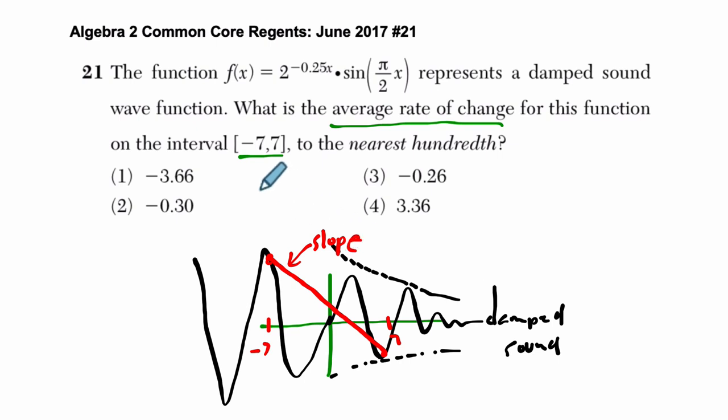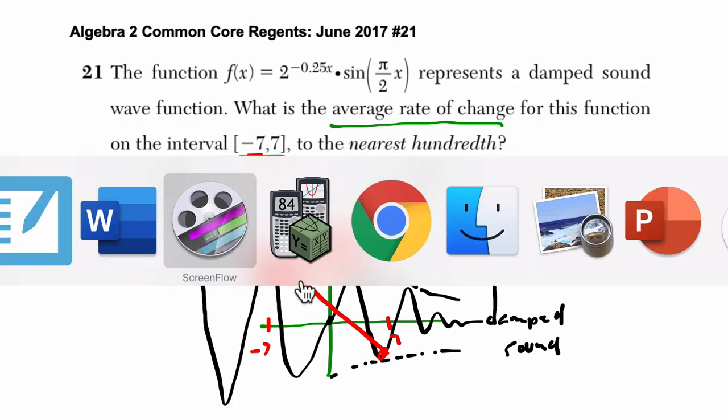All right. What's maybe the fastest way to do this? Well, you could take negative 7, plug in the function, and get an output. That would be this point right here. Then you plug in 7 to this function again, and get an output at this point here. And then you do your slope formula. But I think a faster way of dealing with this is on the calculator.